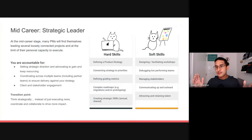So this takes you into the mid-career stage. Many PMs at this point find themselves leading several loosely connected projects and at the limit of their personal capacity to execute on each one. So there's a key pivot point here. In order to have more impact, you can't really just keep executing. At this point, you're probably very good at getting stuff done given the right resources and the direction to head in.